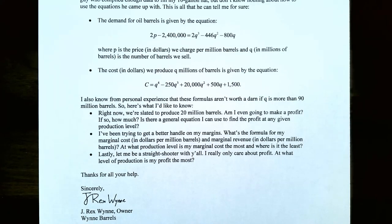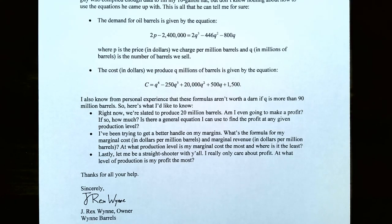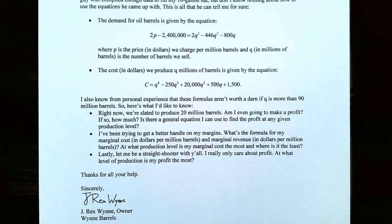Here's what the company's owner would like to know. They're slated to produce 20 million barrels — are they going to make a profit, and if so, how much? Is there a general equation to find profit at any production level? What are the formulas for marginal cost and marginal revenue, both in dollars per million barrels? At what production level is marginal cost greatest or least? And at what level of production is profit maximized?